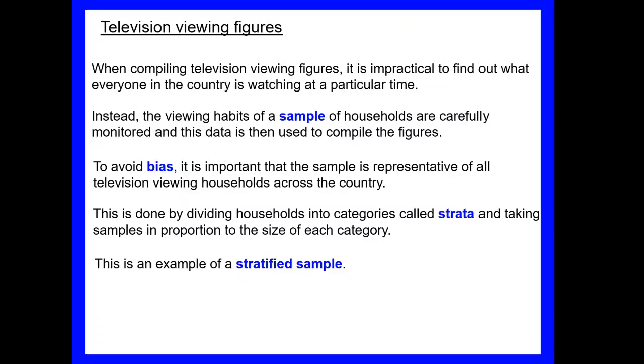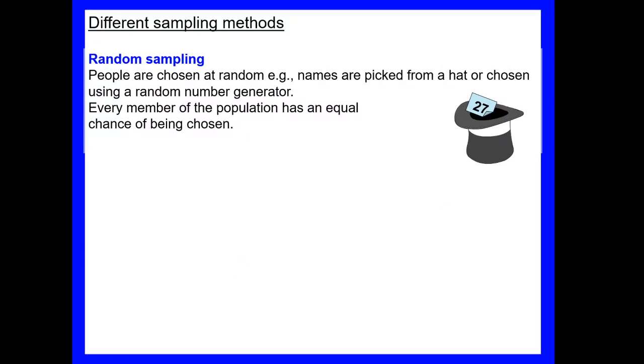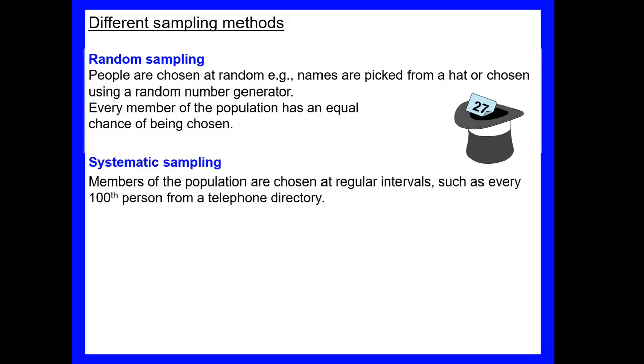An example then of doing that is a stratified sample. So we're going to have a look at some different sampling methods but mainly focusing on stratified sampling. So a few of the different methods you will need to consider: random sampling. You'll probably have experienced random sampling at some point, so that's perhaps where we put names into a hat and they are chosen at random, so the way we would perhaps do a raffle. So every member of the population has an equal chance of being chosen. We could use systematic sampling, so that's where members of the population are taken at regular intervals, so perhaps every hundredth person from a telephone directory or from a list of people. So we can set the interval and then choose from that list.